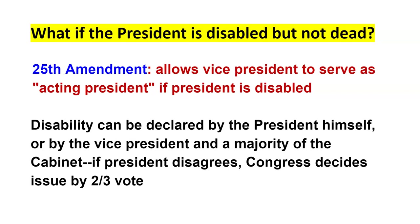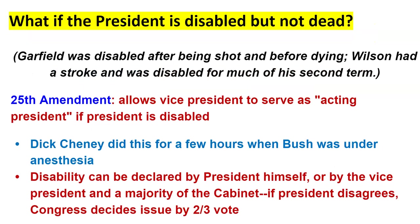If the president is unable to declare themselves disabled, the vice president and a majority of the cabinet could decide the president is disabled. If the president disagrees, Congress can step in — but you need a two-thirds vote to move succession to the vice president, even temporarily. We saw similar situations when Wilson had a stroke and when Garfield was shot and disabled.